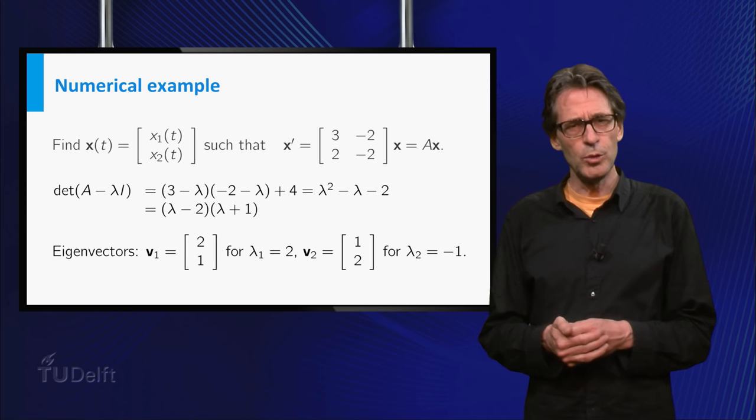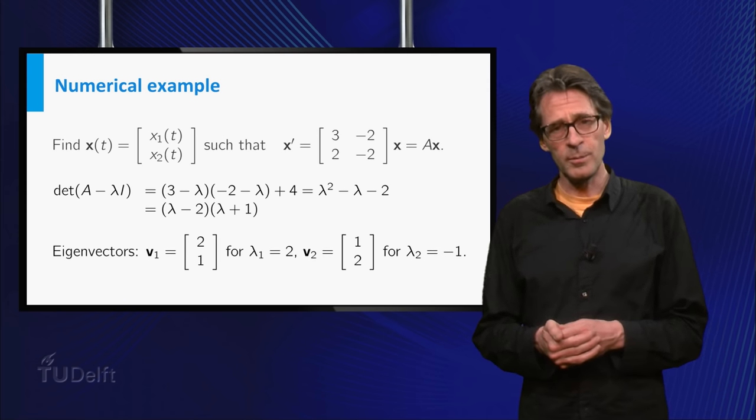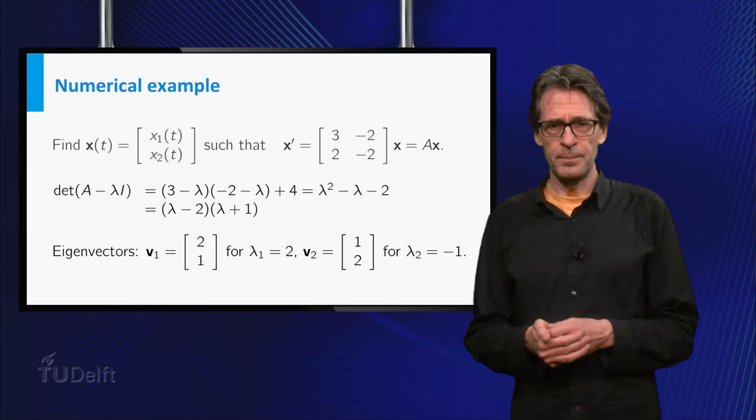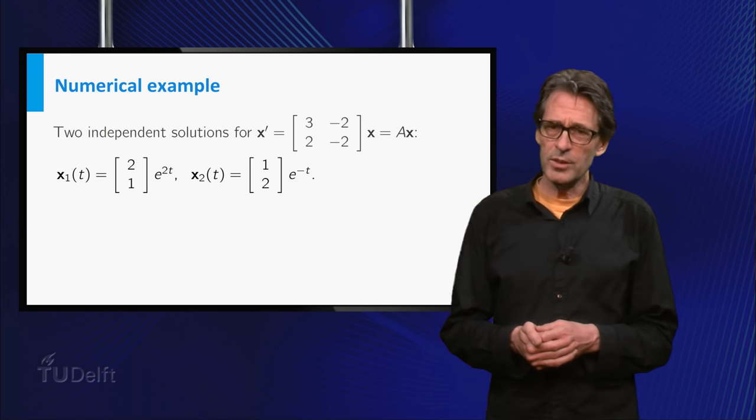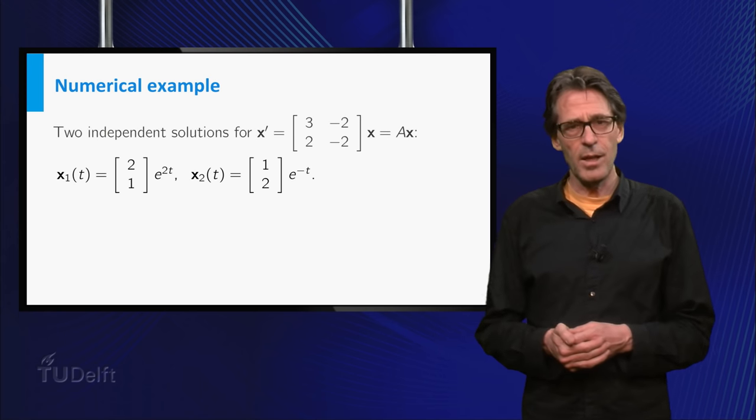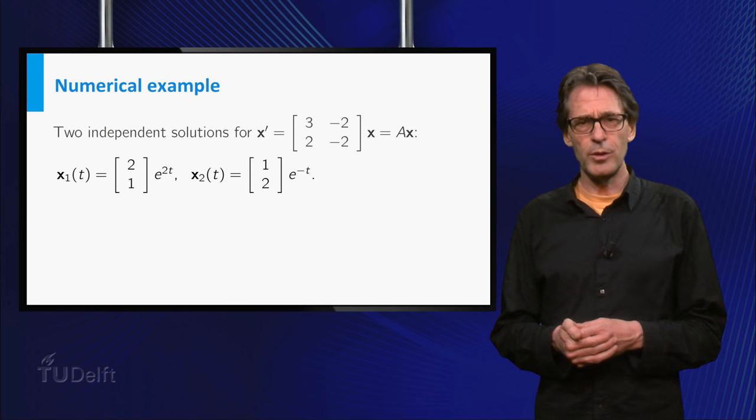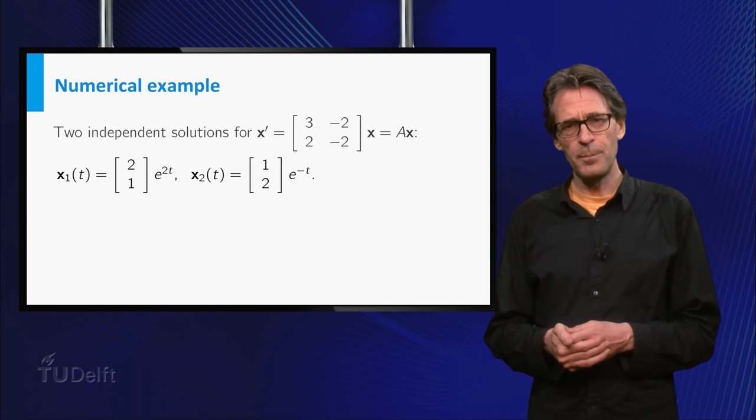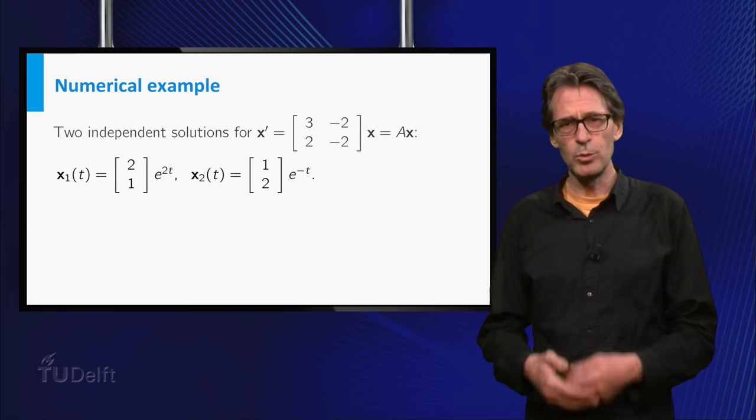For λ equals 2, we can take the vector (2,1). And for λ equals minus 1, the vector (1,2) does the trick. For the system x' equals Ax, we just find two different solutions: (1,2) times e to the power minus t and (2,1) times e to the power 2t.